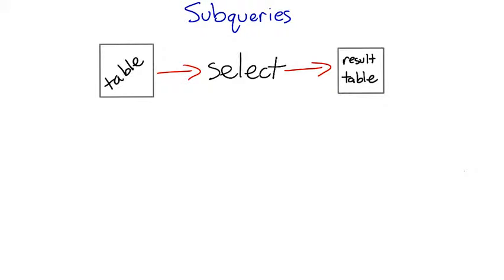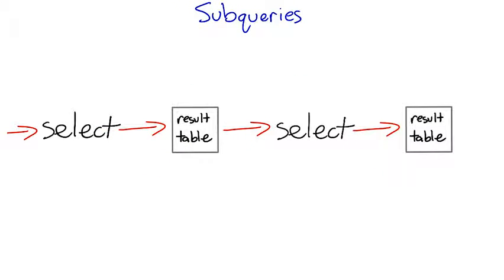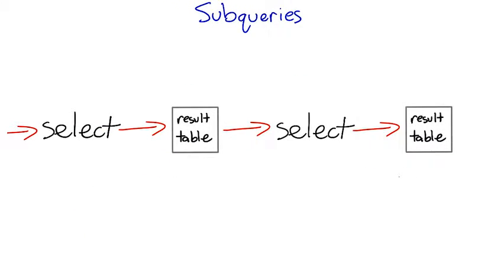Here's something that kind of surprises many people when they learn SQL. So far, whenever you've done a select, you've selected from either a table or a few joined tables. There's another thing you can select from as well — namely, the results of a select query. This is one form of something called a subquery, or sometimes a subselect.